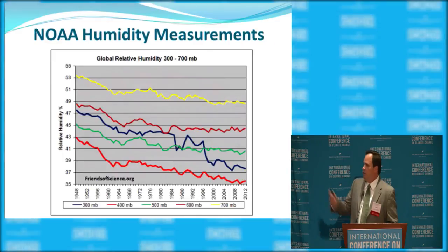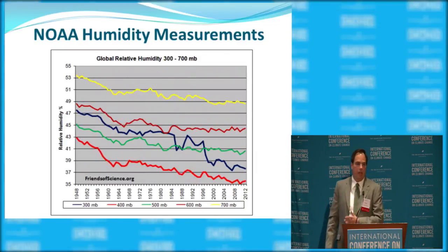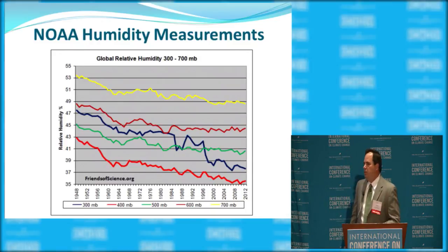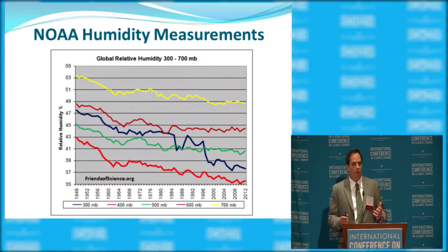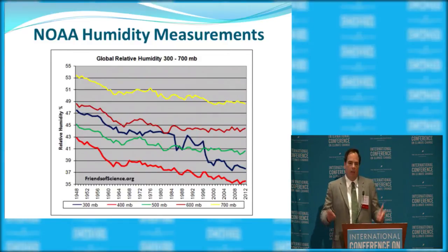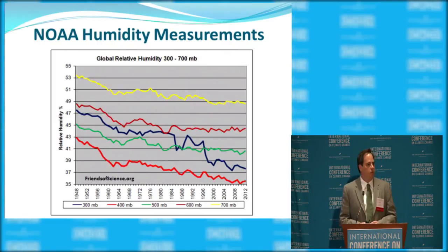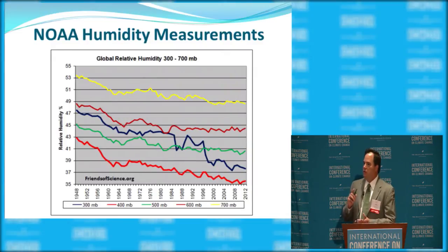NOAA has been measuring relative humidity through weather balloons going back to the 1940s, and we see the same thing — relative humidity declining over this long period. When I've raised this in debates, alarmists say it's not a long enough time period. But the laws of physics are the laws of physics, and the data going back to the 1940s are what they are. You do not see an increase in relative humidity. You do not see an increase in cirrus clouds. That's why the models fail.